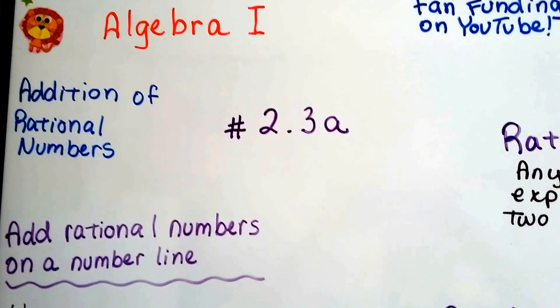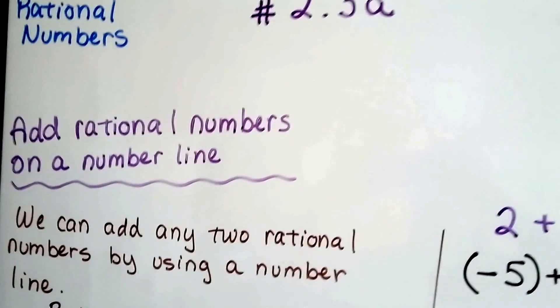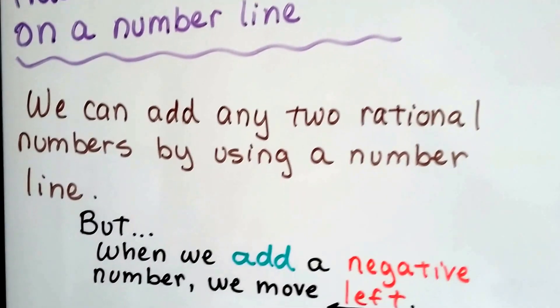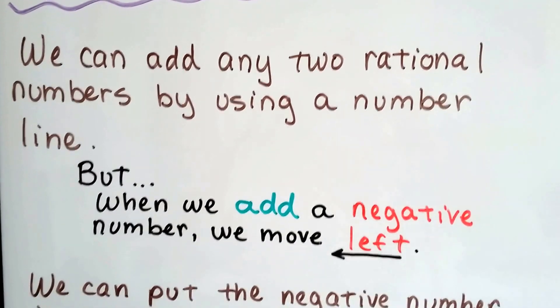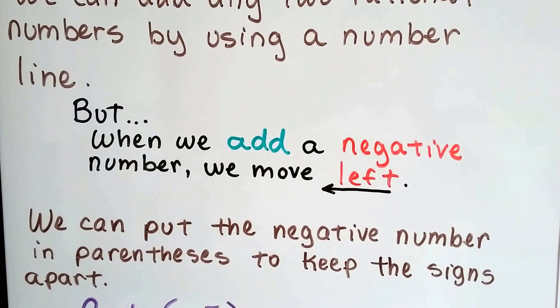Algebra 1, number 2.3a. We're going to add rational numbers on a number line. We can add any two rational numbers by using a number line, just like doing whole numbers.